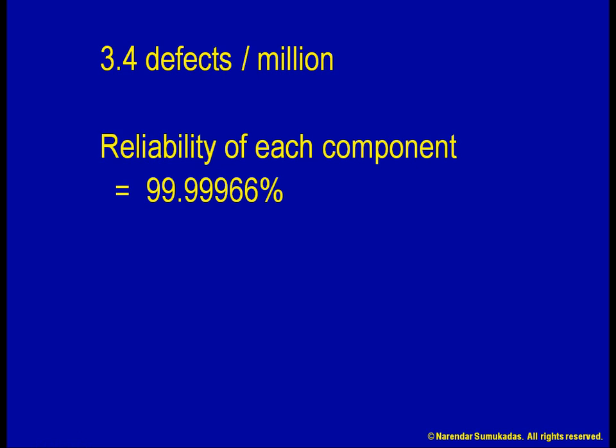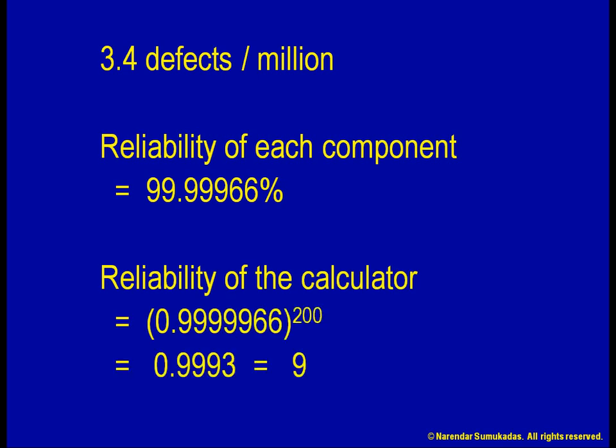To produce my calculators, let us say I upgrade my processes to a 6-sigma level, but factor in a 1.5 standard deviation shift. Each of my 200 components is 99.99966% reliable. Therefore, about 99.93% of the calculators will be defect-free. In a box of 1000 calculators, I can expect to find 0.7 or 7 tenths of a defect or one defect in every 1.43 boxes.